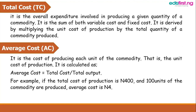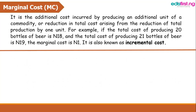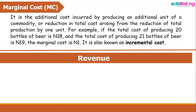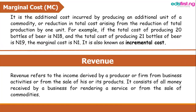Marginal cost is the additional cost incurred by producing an additional unit of a commodity, or the reduction in total cost arising from reducing total production by one unit. For example, if the total cost of producing 20 bottles of beer is 18 naira, and the total cost of producing 21 bottles is 19 naira, the marginal cost is the extra 1 naira the firm incurs by increasing from 20 to 21 bottles.